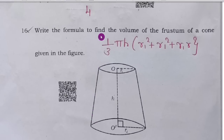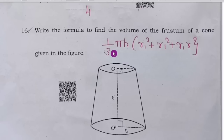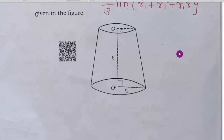Sixteenth question: write the formula to find the volume of the frustum of a cone. The volume of the frustum of a cone is (1/3)πh(r₁² + r₂² + r₁r₂). These questions carry one mark each.